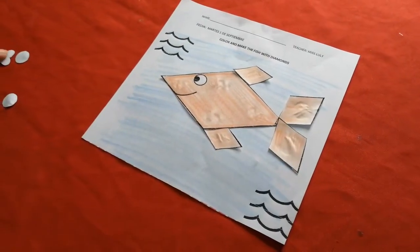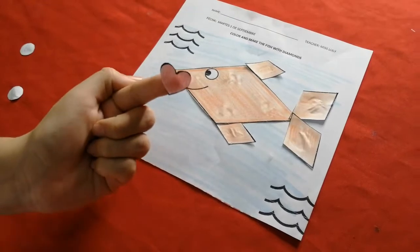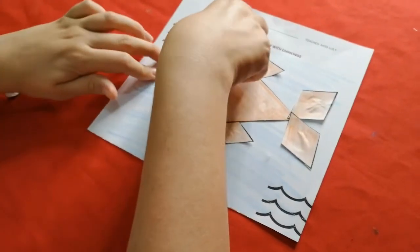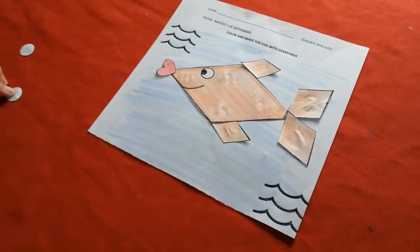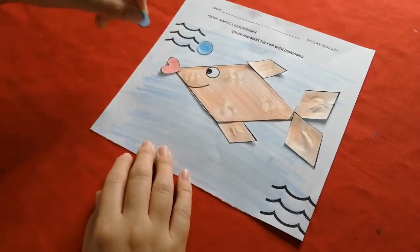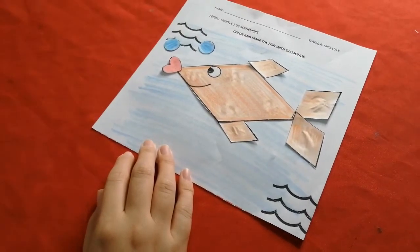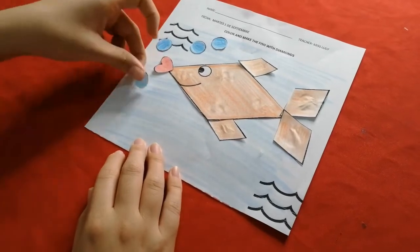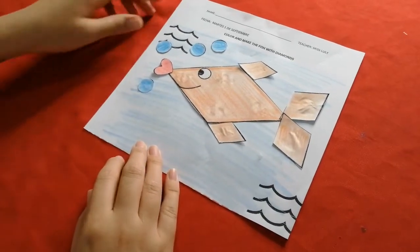Now, the heart. Heart. Ding! Now, the circle. Now, the circle. One circle. Two. Three. Four. Excellent, children.